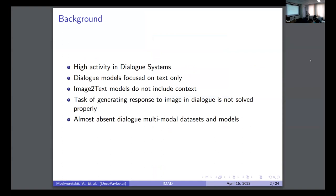One of the primary issues is that dialogue models mostly focus on text only. Image-to-text models do not include context, and we want to work in the context of dialogue. So the task of generating responses to images in dialogue is not solved properly. There are models, but they are very far from ideal.